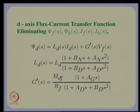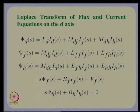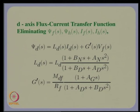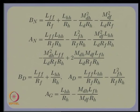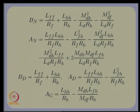By eliminating psi_f(s), psi_h(s), i_f(s), and i_h(s) using the algebraic equations from the Laplace-transformed system, we get a second-order transfer function L_d(s) and G'(s). The coefficients a_n, b_n, a_d, b_d, and a_g are related to the basic parameters. For example, a_g depends on L_hh, r_h, M_dh, L_fh, M_df, and r_h.